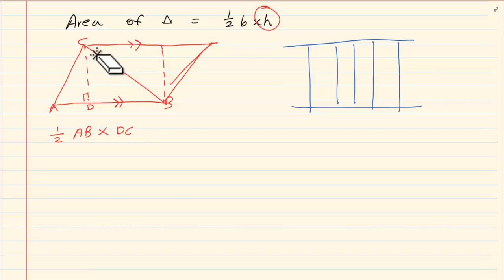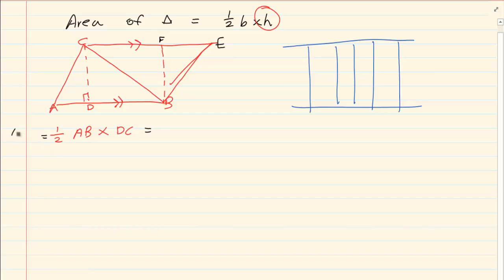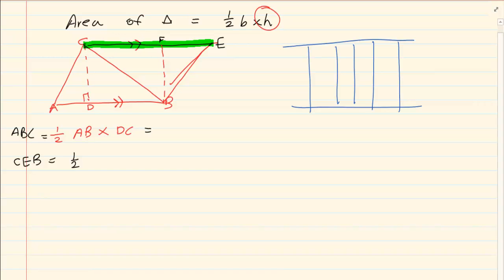So if there is another triangle here, what would the area of triangle CEB be? We know that this one is the area of triangle ABC. The area of triangle CEB would be equal to half, and then the base CE, times the perpendicular height, which in this case is FB.